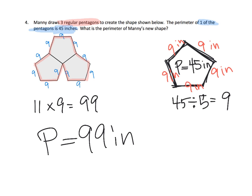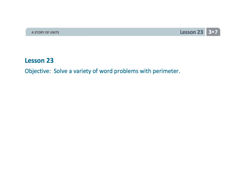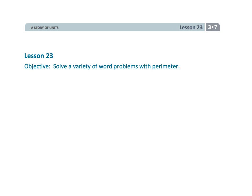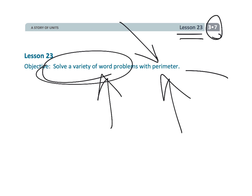The important thing to know is we do not need to add the interior lengths because they're not part of the perimeter — they're part of the interior of the figure. And that wraps up a fun one. That was third grade, module 7, lesson 23. We are solving a variety of word problems about perimeter.